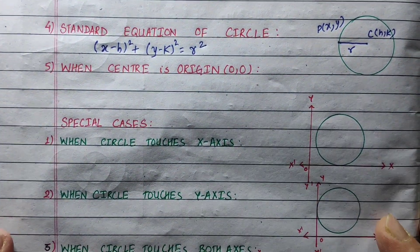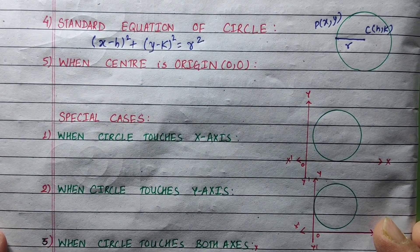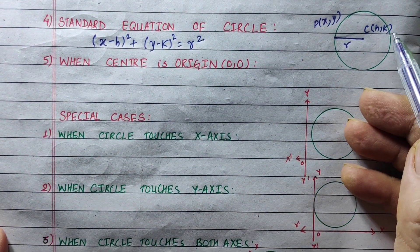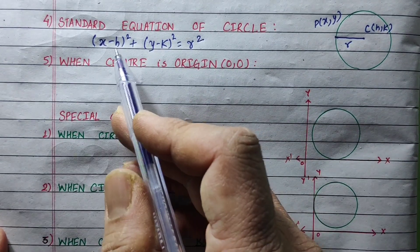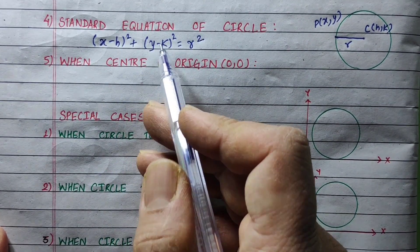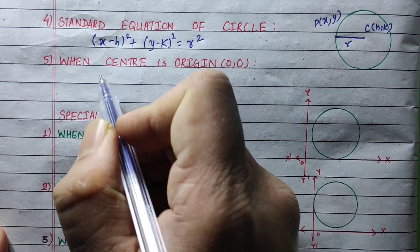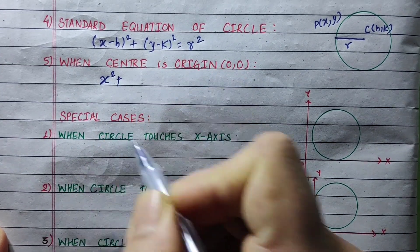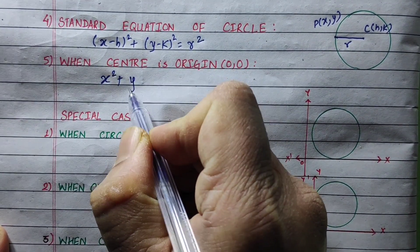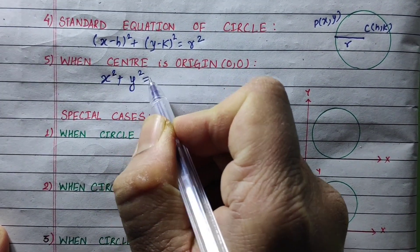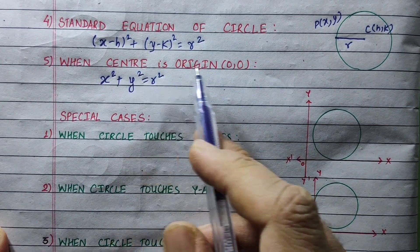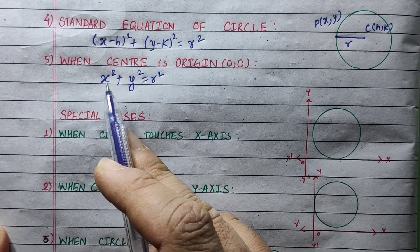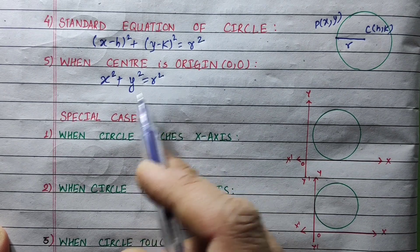Now, when the center is at the origin, h equals 0 and k equals 0. Substituting, the equation simplifies to x squared plus y squared equals r squared. So when the center is at the origin, the equation of the circle is x squared plus y squared equals r squared.